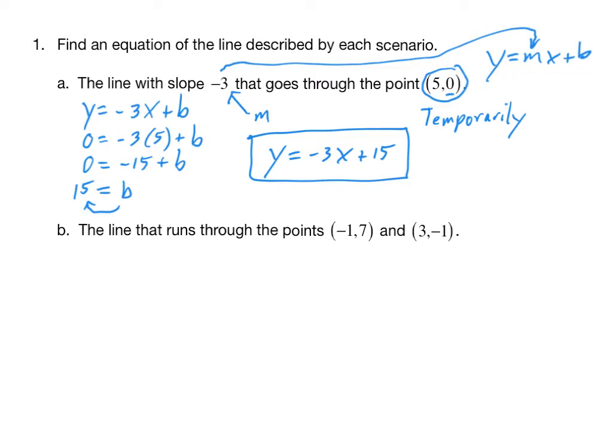Now, the next question, find the equation of the line that runs through the points (-1,7) and (3,-1). Notice this time we don't have the slope, nor do we have the y-intercept. So we're given a little bit less information. We're still going to build off of the y = mx + b idea. But we don't currently already have m or b.